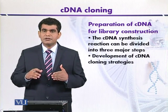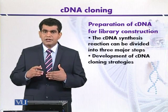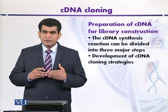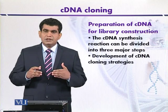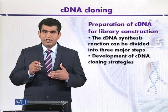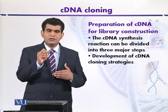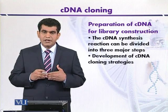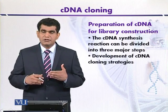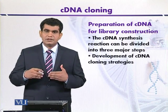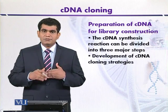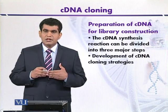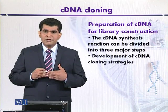Once the first strand is synthesized, the messenger RNA template is degraded by alkaline treatment. The second strand has a particular feature: at the five prime end it can fold on itself, forming a hairpin loop structure. This hairpin loop acts as a primer to direct second strand synthesis. The five prime loop is then degraded with nucleases such as S1 nuclease, after which the cDNA can be ligated into an appropriate vector.